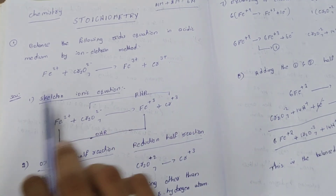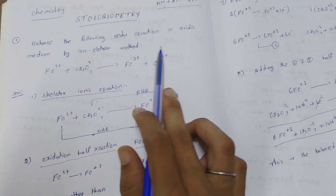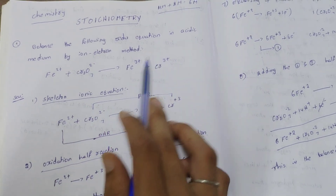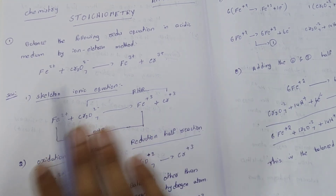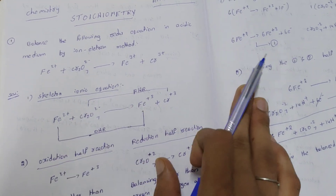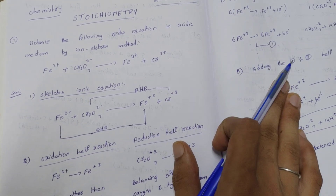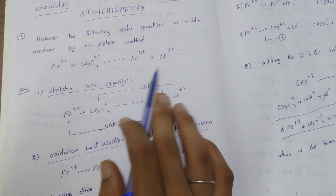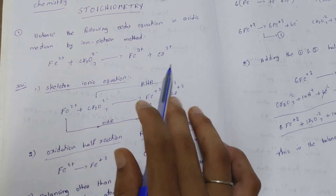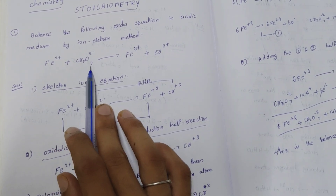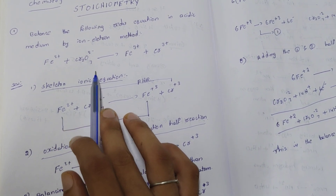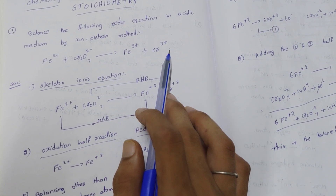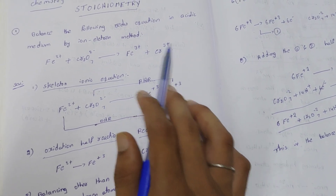First, we will balance the following redox equation in acidic medium by the ion-electron method. The equation is: Fe2+ + Cr2O7(2-) gives rise to Fe3+ + Cr3+. We have this equation to work with.